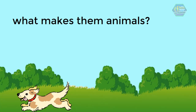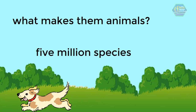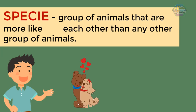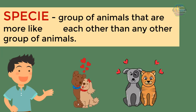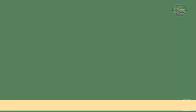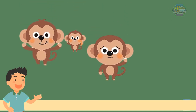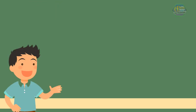If we want to talk about numbers, there are at least five million species on our planet. A species is a group of animals that are more like each other than any other group. They can mate with each other but not with members of another species. For example, monkeys can only make babies with another monkey, but not with dolphins.